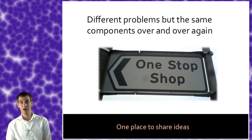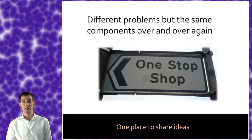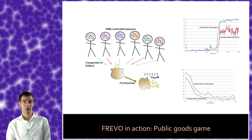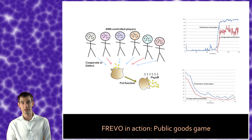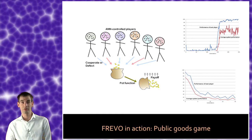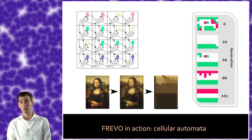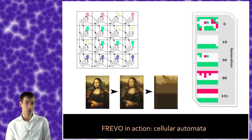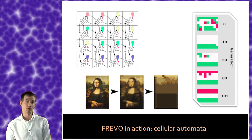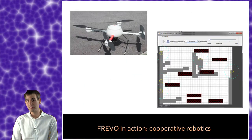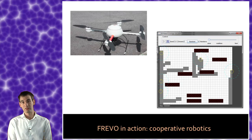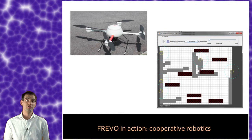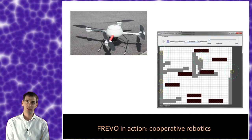As a showcase I would like to show the variability and the diverse application fields where we think Frevo can be used: game theoretical problems using the public goods game to evolve players towards cooperation, using cellular automata to reproduce a picture where each pixel is assigned a so-called brain to interact only with the local neighborhood, and of course robotics — connecting to one of the famous simulators and evolving the behavior of the agent or robot itself.